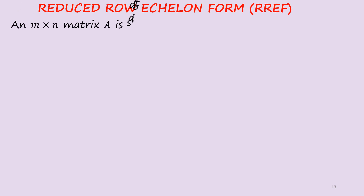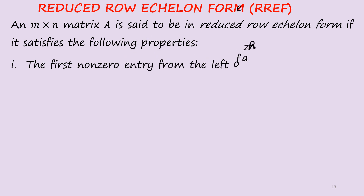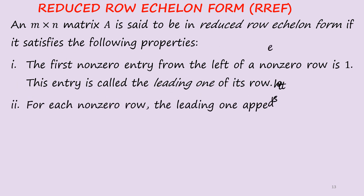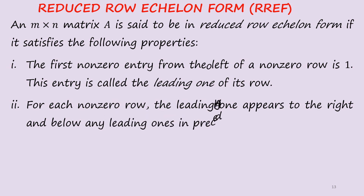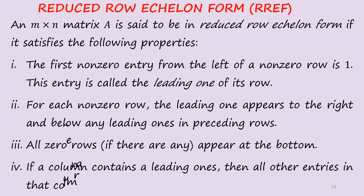Reduced row echelon form (RREF): an m×n matrix A is said to be in reduced row echelon form if it satisfies the following properties. First, the first non-zero entry from the left of a non-zero row is 1 — the leading one. Second, for each non-zero row, the leading one appears to the right and below any leading ones in preceding rows. Third, all zero rows appear at the bottom. Fourth, if a column contains a leading one, then all other entries in that column are 0.